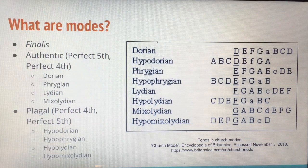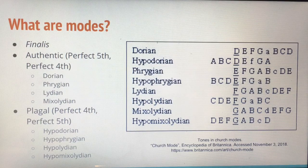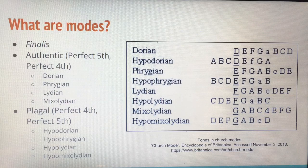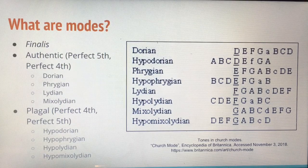Modes are based on a finalis, or final note. The authentic modes are built with a perfect fifth and then stacked with a perfect fourth. The authentic modes are the Dorian, Phrygian, Lydian, and Mixolydian. Each of these modes has a related plagal mode. They are built in the reverse way, starting with a perfect fourth below the finalis, and then a perfect fifth.